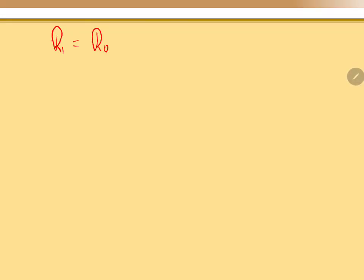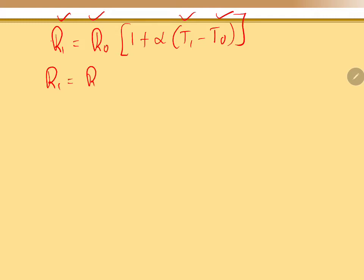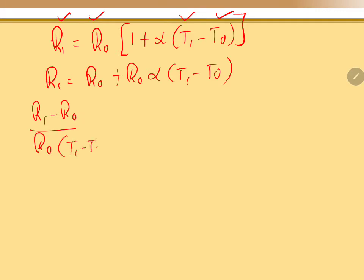To solve this, first I'll compare R₀, T₀ with R₁, T₁ by rewriting the formula: R₁ = R₀(1 + α(t₁ - t₀)). I need to find alpha, and I know R₁, R₀, T₁, and T₀. Rearranging gives: R₁ - R₀ divided by R₀(t₁ - t₀) equals alpha.